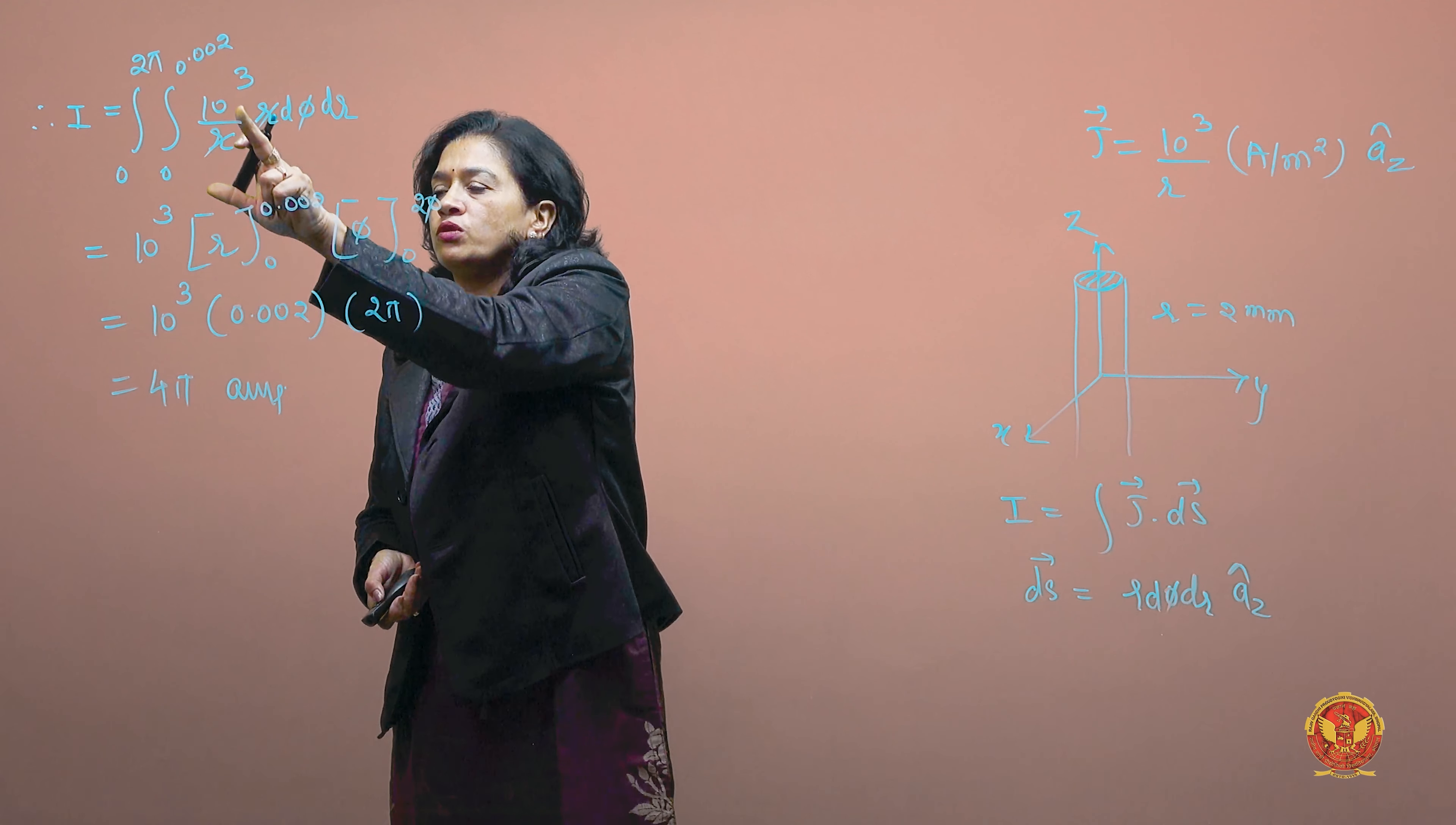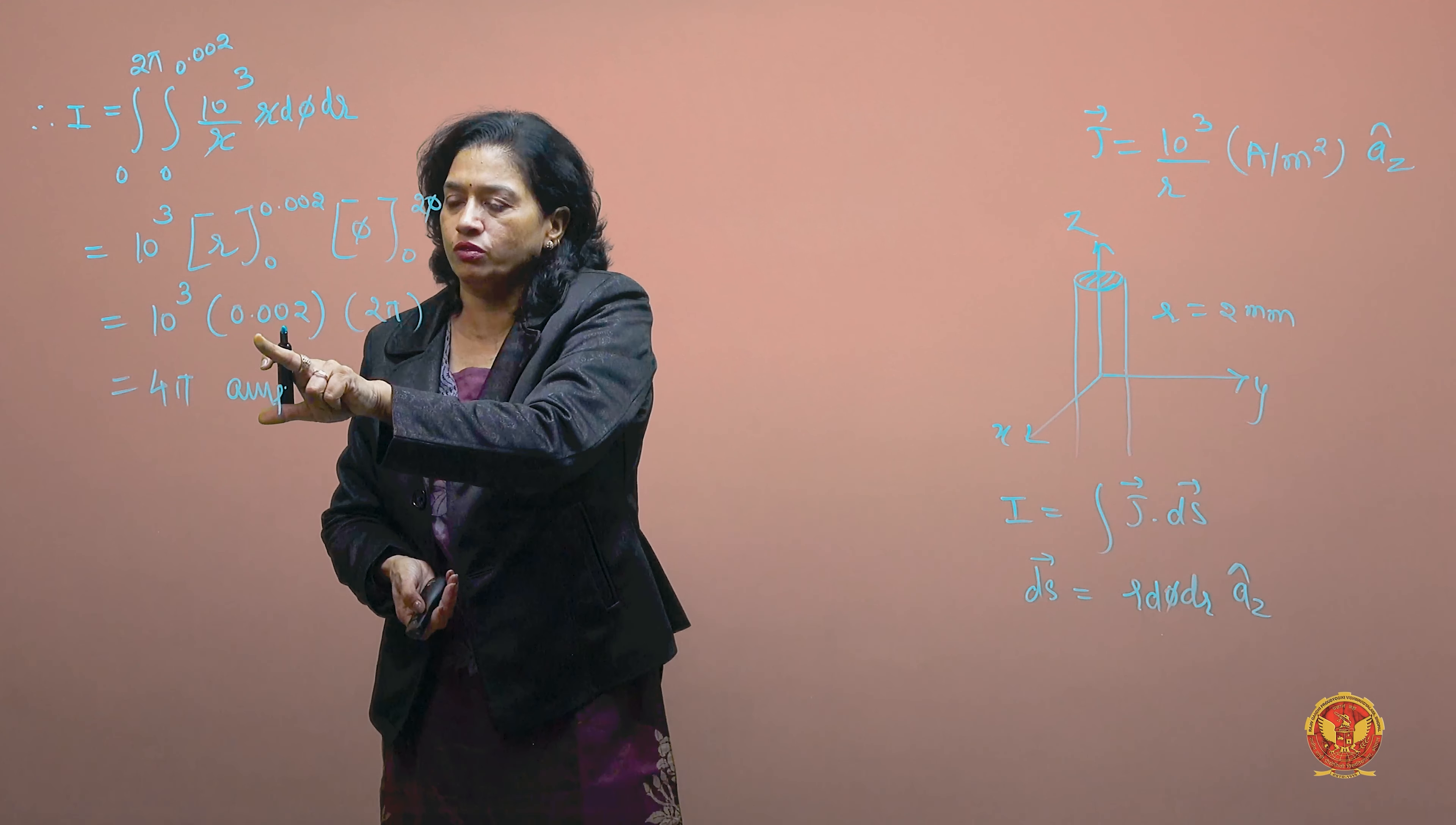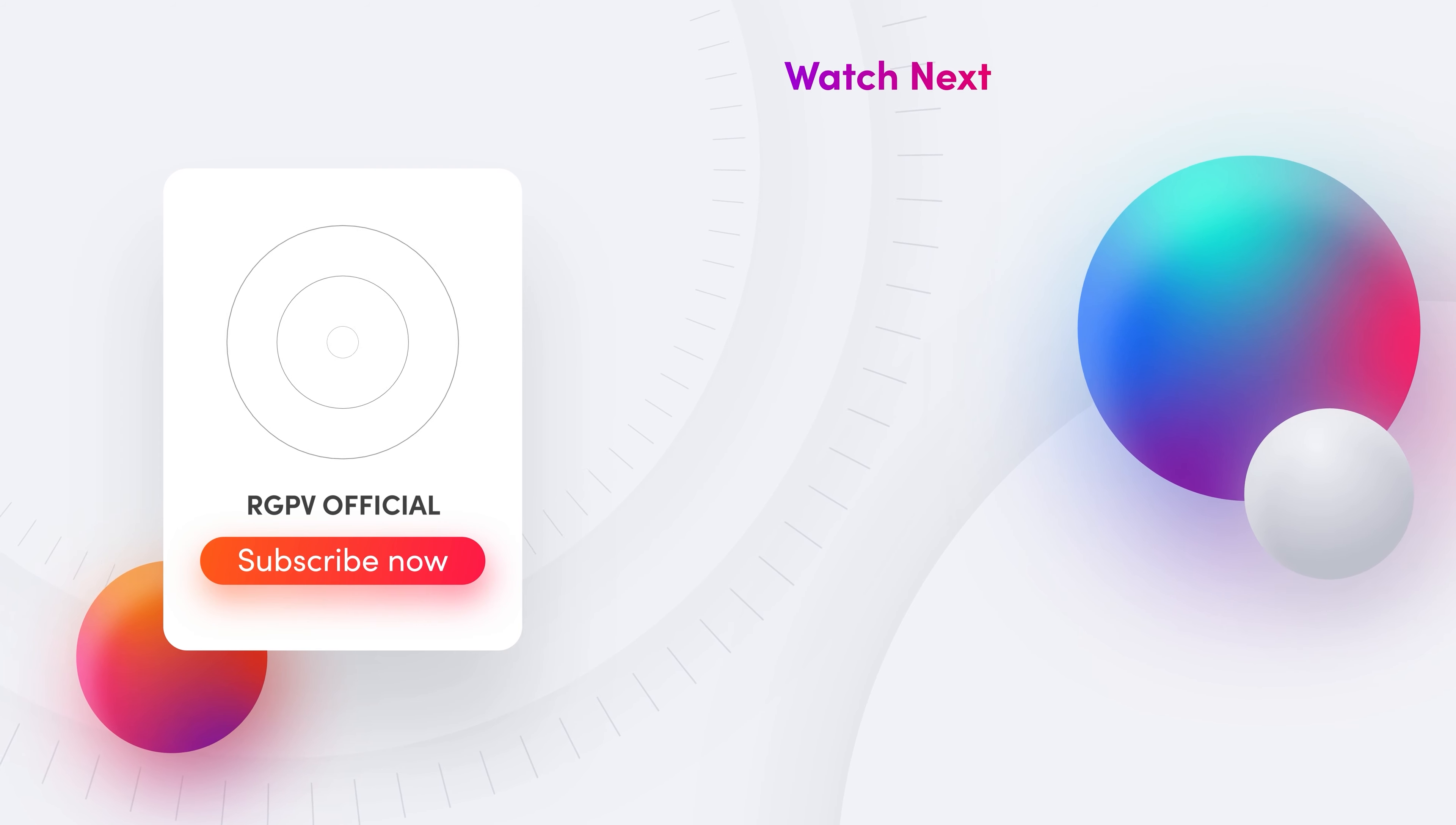Substituting, we have 10³ integrated from 0 to 0.002 for r and from 0 to 2π for φ. When we solve this, 10³ times 0.002 times 2π gives us 4π amperes.